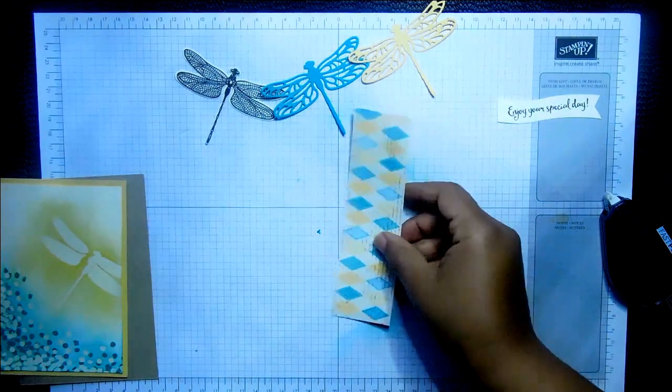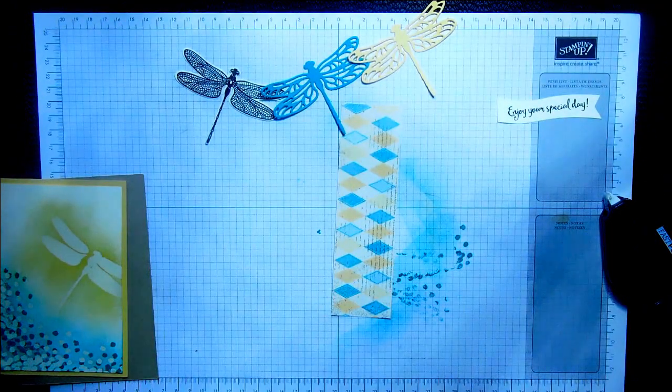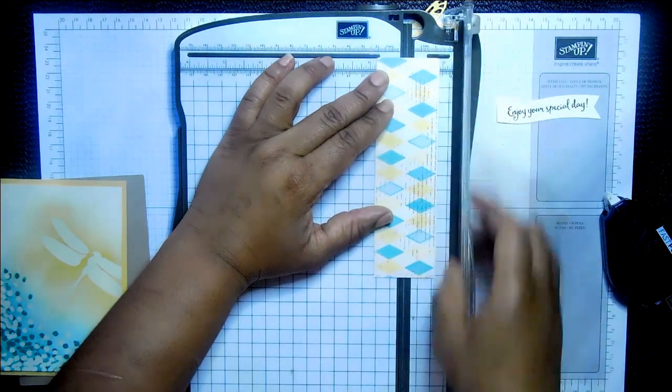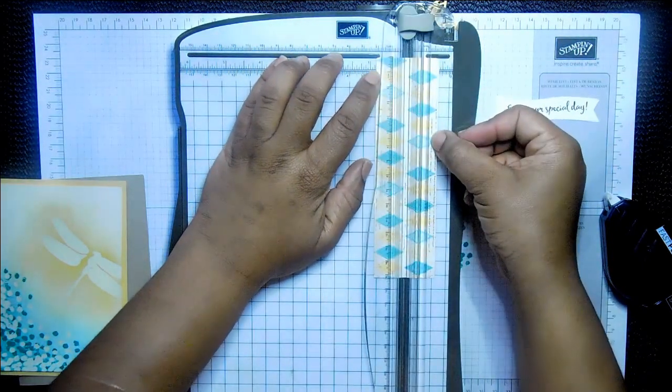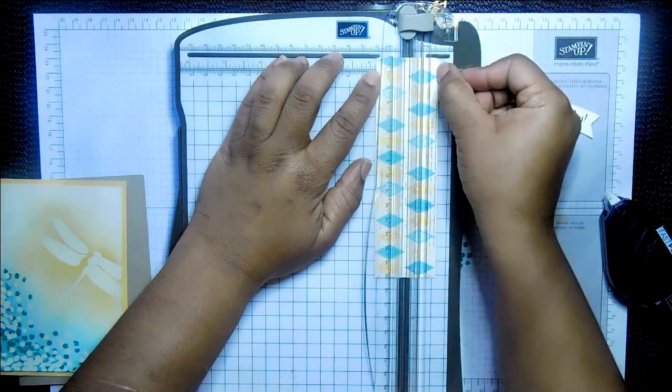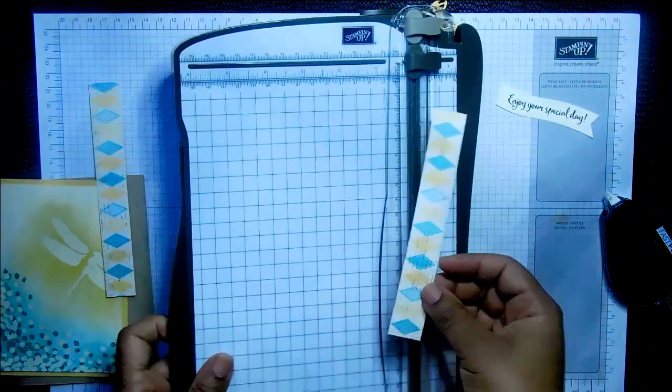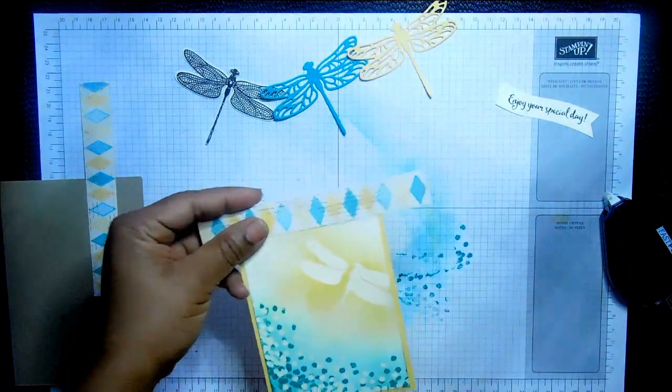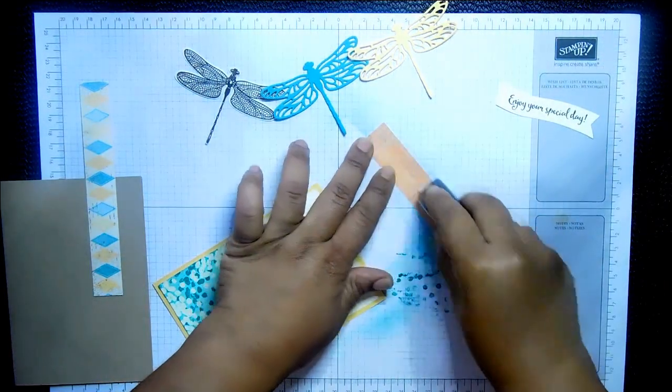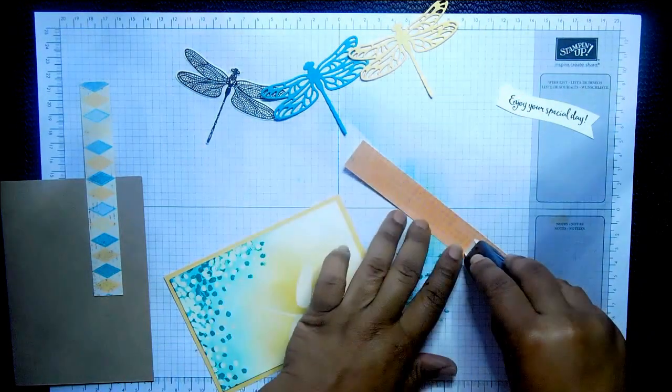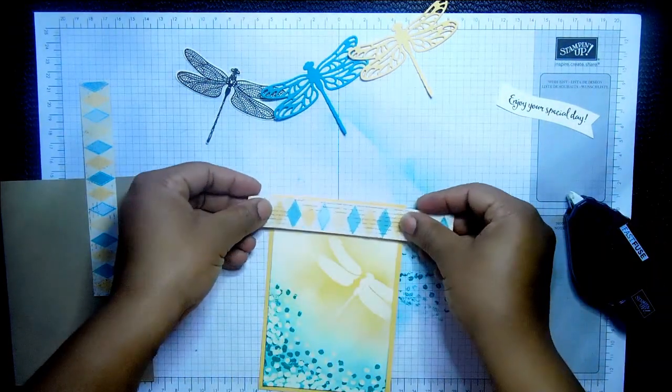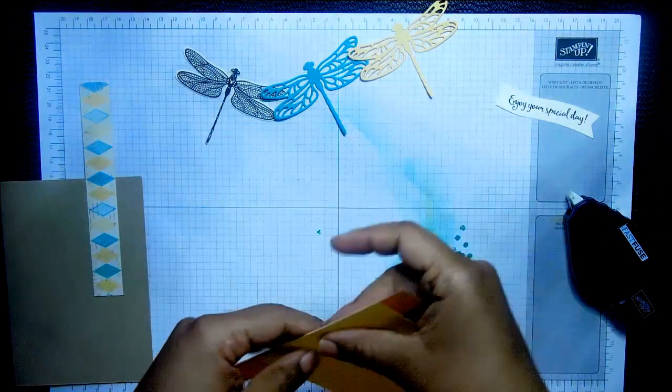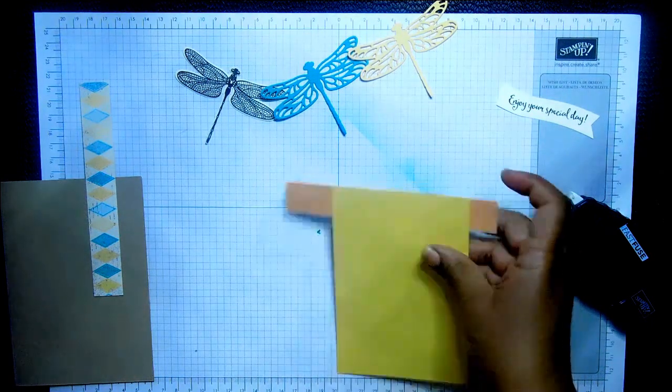And take this strip. And cover it right across the top. Actually. I think I'm going to cut this in half. Just so I've just got one strip of the diamonds. So I'm just putting this in my paper trimmer. I'm going to line up. So I've got one strip of the diamonds instead of two. Yeah. That's better.